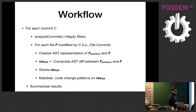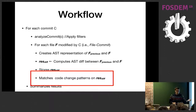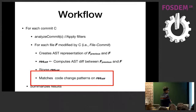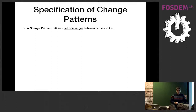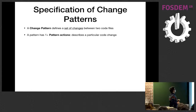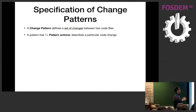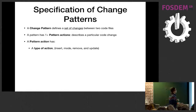Once we have the result from Gumtree — the differences between the two ASTs — we want to know whether these changes match an instance of a code pattern. In Coming, we defined the concept of a change pattern. A change pattern defines a set of changes between two files. A change pattern has one or more pattern actions, where each pattern action describes one particular change — for instance, one insert or one remove. A pattern action has the type of action from Gumtree: insert, move, remove, or update.